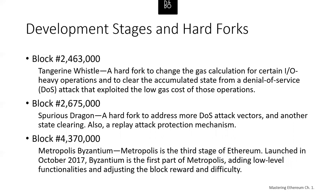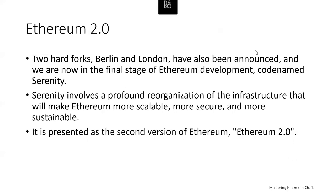Metropolis Byzantium is the third stage of Ethereum, launched in 2017. Byzantium is the first part of Metropolis, adjusting the block reward and difficulty. Several future hard forks have been announced for Berlin and London, as part of the final stage of Ethereum development, codenamed Serenity. Serenity involves a profound reorganization — the infrastructure will make Ethereum more scalable, more secure, and more sustainable. It's presented as the second version of Ethereum: Ethereum 2.0.